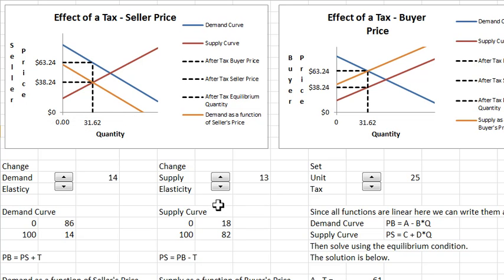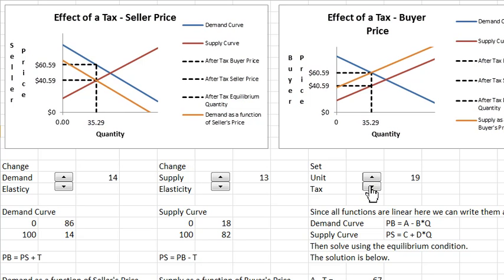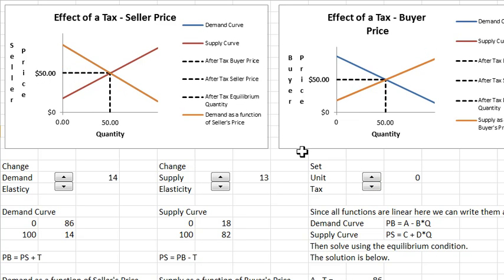You have three different controls here. The tax control may be the easiest one to understand, so I'm going to set the tax back to zero. When you do that, you have supply and demand curves as you normally see them. Now let's start increasing the tax.